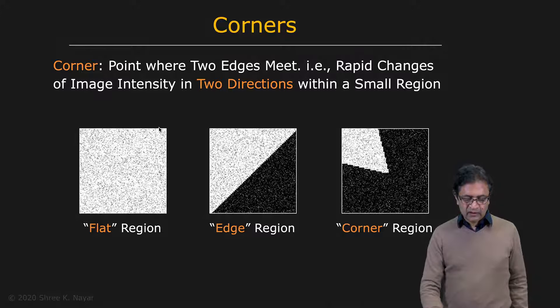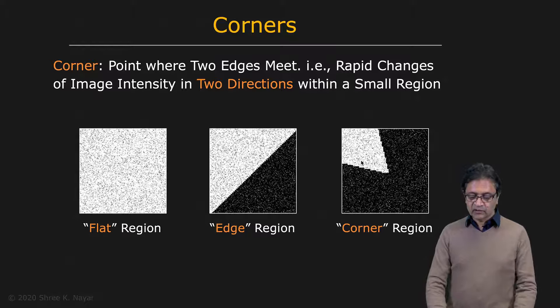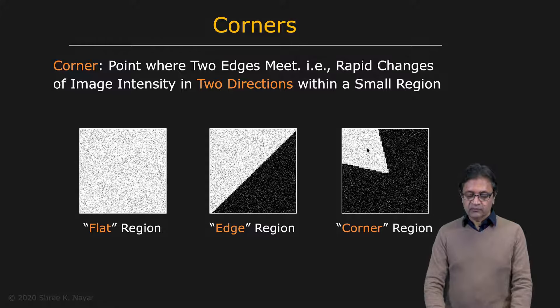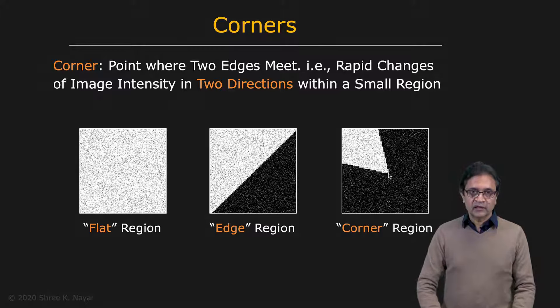Here we're showing fairly large regions — a flat region, an edge region, and a corner region. In the flat case, you have more or less constant brightness, barring the noise in the image. In the edge case, you have a high brightness value and a low brightness value with a clear edge in the middle. And in the case of a corner, you have a large brightness value and a low brightness value, but two edges that come to meet at the center of a pixel.